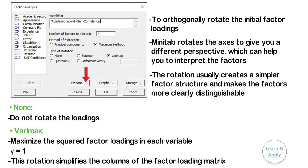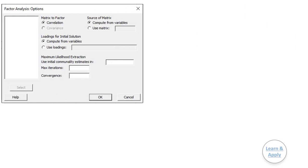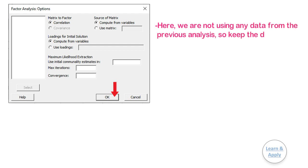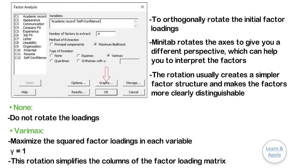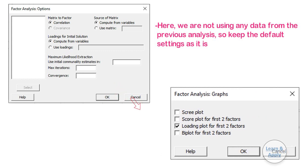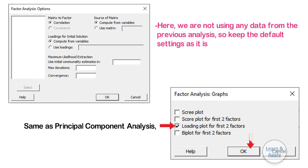In Options, keep the default settings as they are. If you are using data from a previous analysis, make changes in these fields accordingly; here we are not using any data from a previous analysis, so keep the defaults. Step 7: From the Graphs menu, select the graphs you want to see for analysis — all the graphs are the same as those seen in the principal component analysis. Step 8: Click OK in each dialog box to get the results. We will get the results of the analysis in the session window and in the graph window.